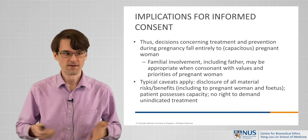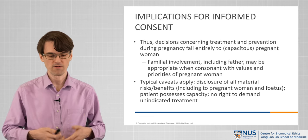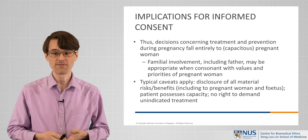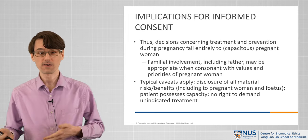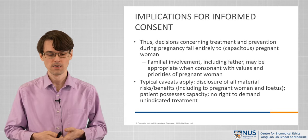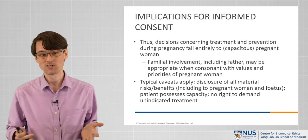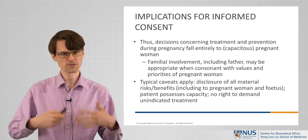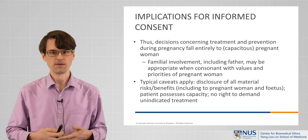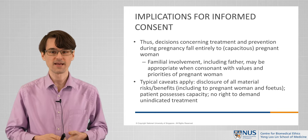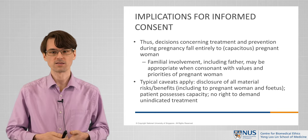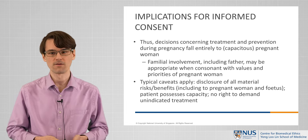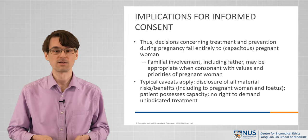As with many areas of informed consent, there are various caveats that apply. Disclosure of all material risks and benefits, including to the pregnant woman and the fetus, will need to be disclosed as part of the informed consent process. This is, again, assuming the patient has capacity — we'll return to the capacity question with our case study. But also, as a reminder, the responsibility to ensure informed consent is obtained does not mean that patients have a right to demand any treatment they request. Unindicated treatment that does not provide benefit to the mother or the fetus does not need to be offered merely at request.